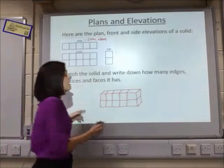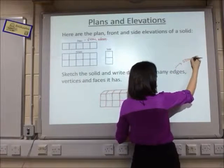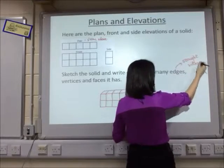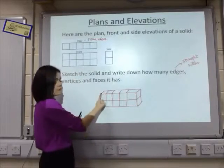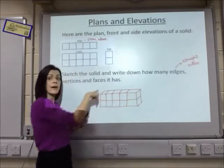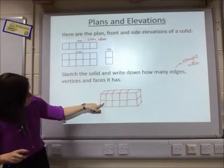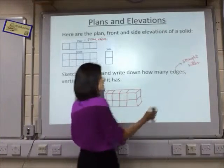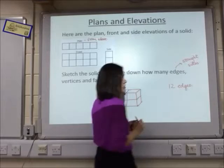Edges are basically all the straight sides. I've got one, two, three, four around the front. There'll be four around the back as well. And there's one, two, three, four joining the front to the back. So altogether that's three lots of four — that's 12 edges.